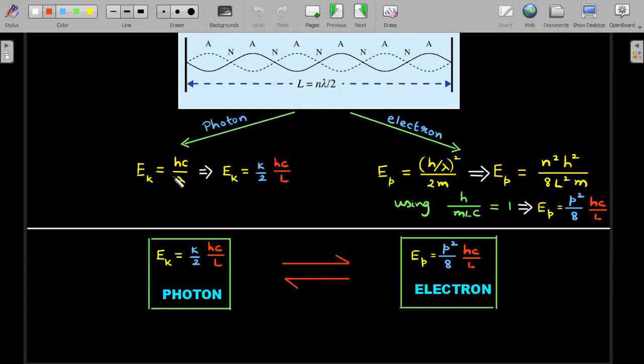If I apply it to photons, then the energy of the kth harmonic of the photon should be associated with hc by lambda of that kth harmonic. Lambda you could substitute as 2L divided by k, where k is the harmonic number.